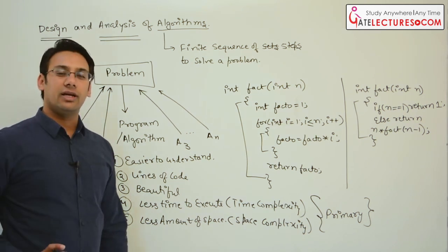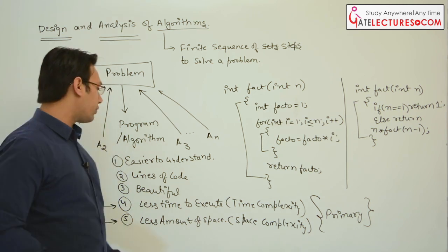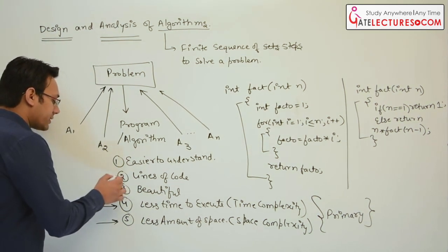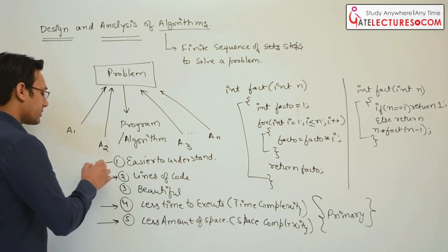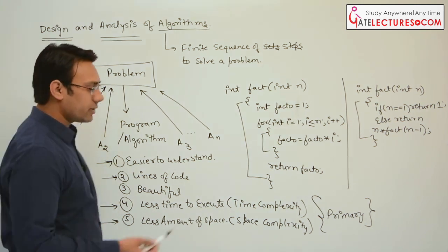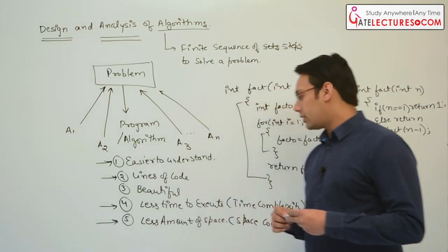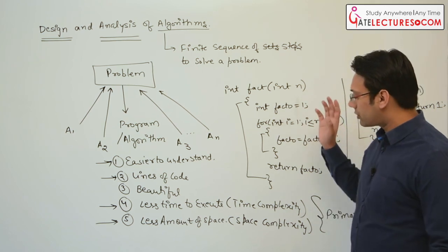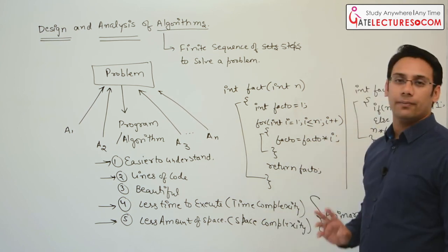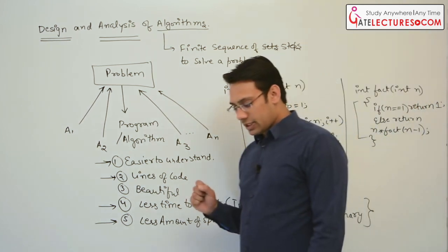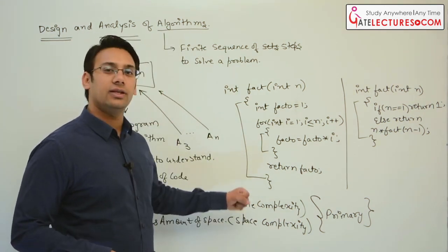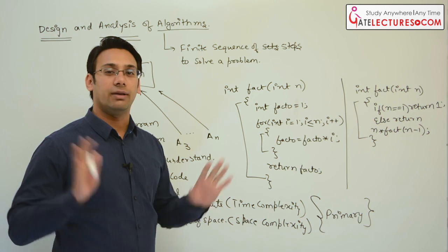When you have done these two comparisons, then you can consider others. But when I say which program is better, I will compare on the basis of time complexity and space complexity. What is time complexity? How can you say a program is better on the basis of time complexity? Let us say we have a computer here.